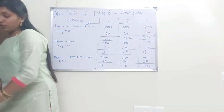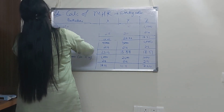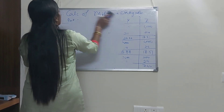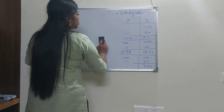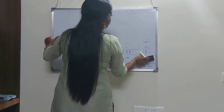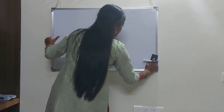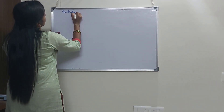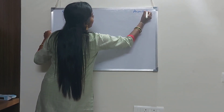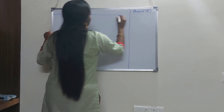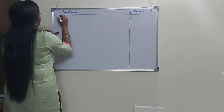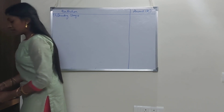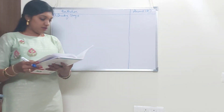Under machine hour rate calculation, there are two different charges. One is standing charges, and the other is variable charges. You can take step 2 as calculation of machine hour rate. Under this, we have two columns: particulars and amount in rupees, with separate columns for machine X, Y and Z. Under standing charges, except depreciation, power and repairs, the rest are going to be under standing charges.